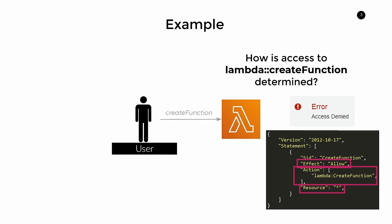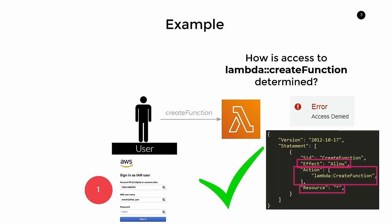Assuming you have this policy document associated with your user, if you were to try and call CreateFunction, you would be able to do it. Now, before we move on, I want to quickly touch on three different ways you can interact with AWS to, for example, create a function. Regardless of which way you choose, permissions to perform an action are always evaluated against the policy document associated with the user. The most common way for beginners is through the AWS console.